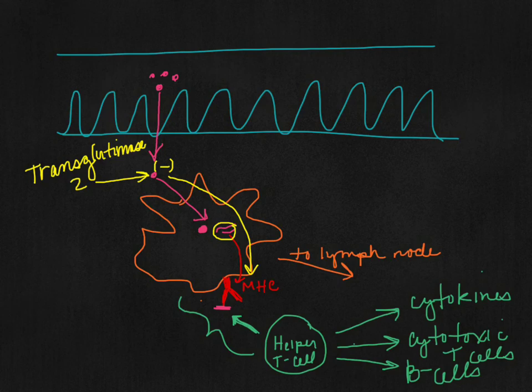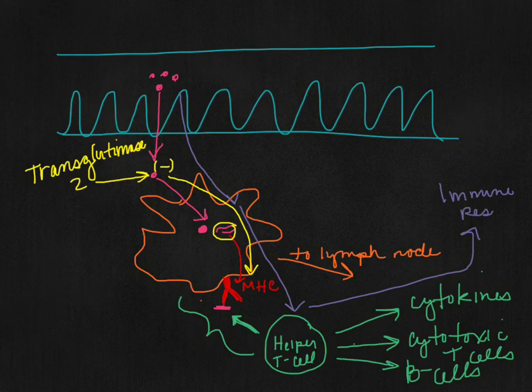What you can see here is that we've got the dendritic cell starting the process, presenting to the helper T cell. This causes our immune response, and then that actually makes transglutaminase more active. It's this downward cycle, eventually causing celiac disease.